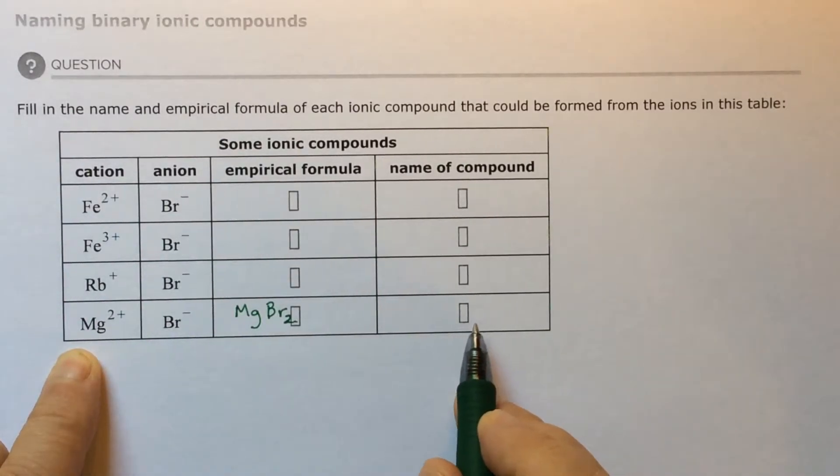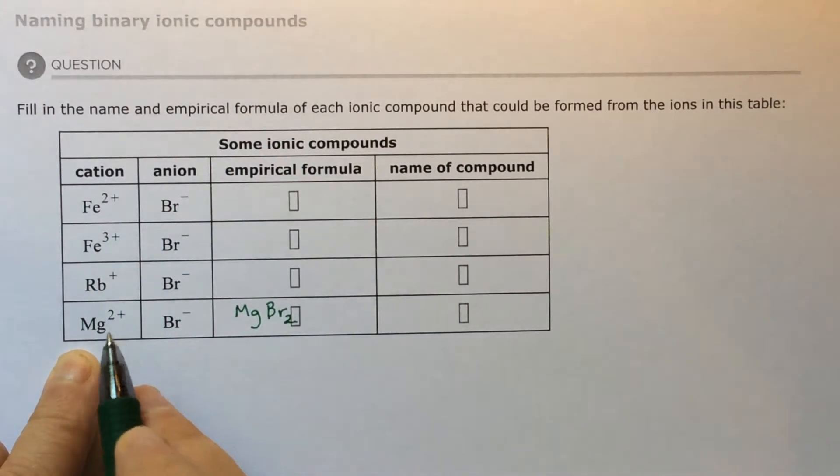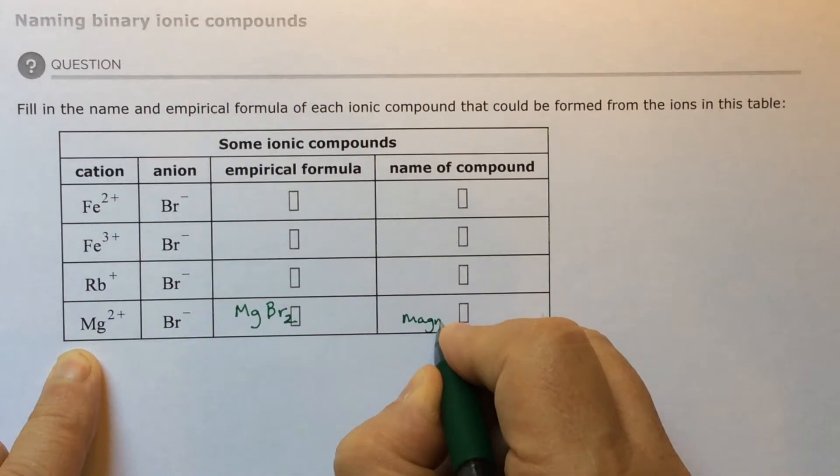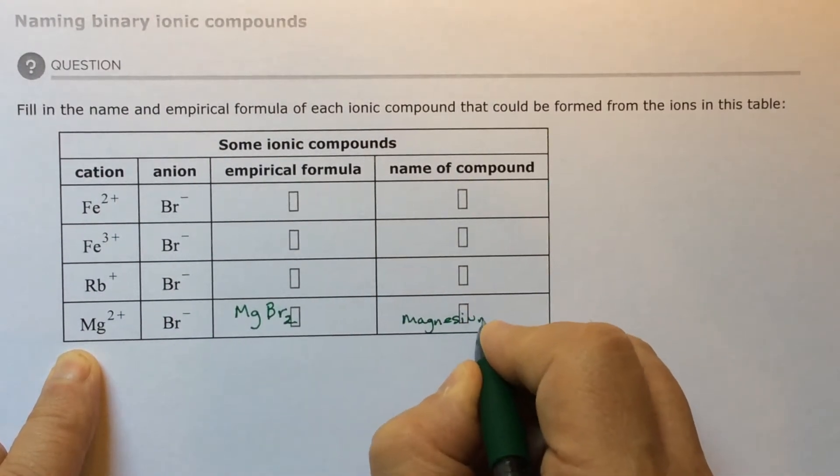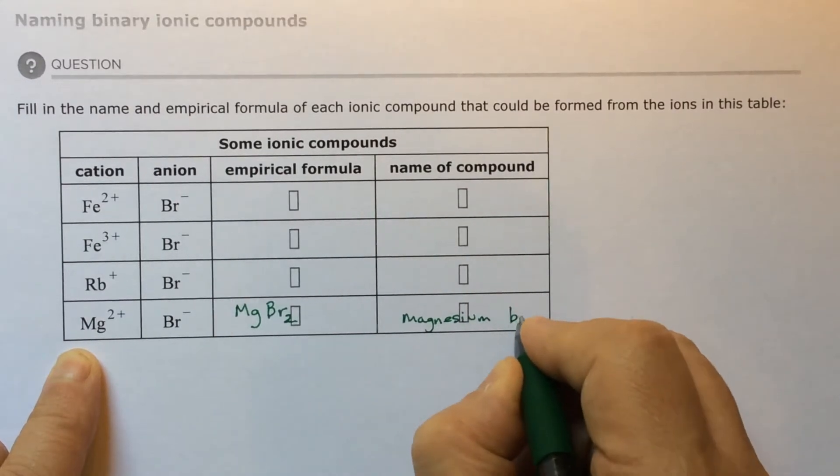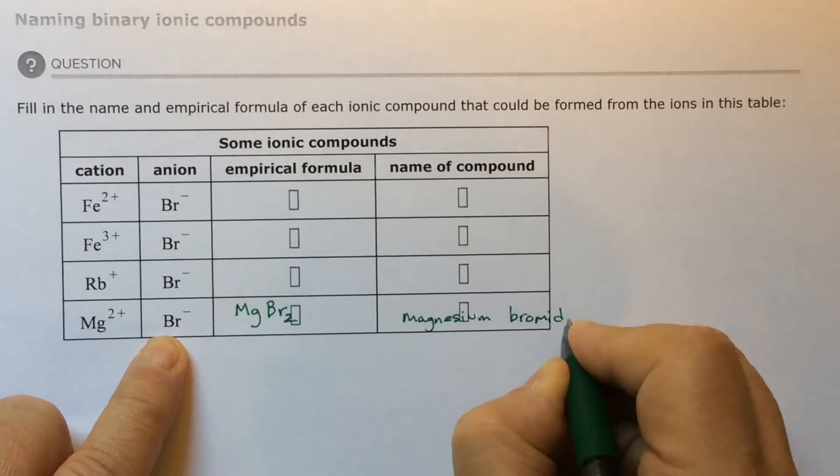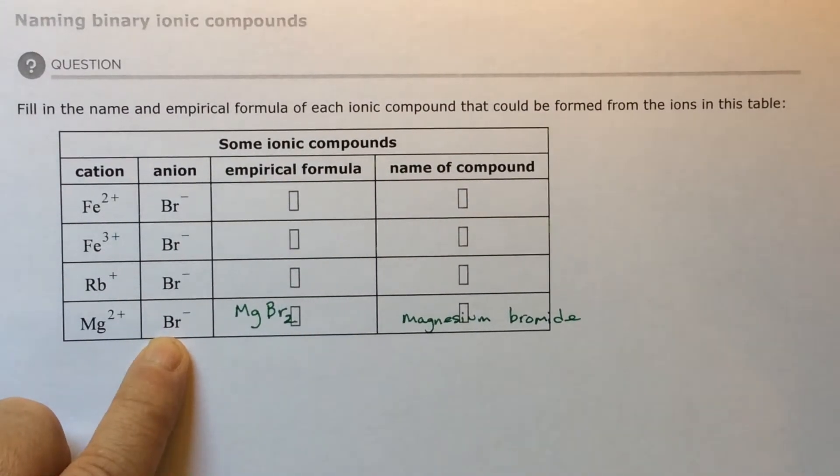What about its name? Since this is a representative element in group two, you don't have to worry about special names. You just say magnesium, and then bromine turns to bromide because it's second. Magnesium bromide.